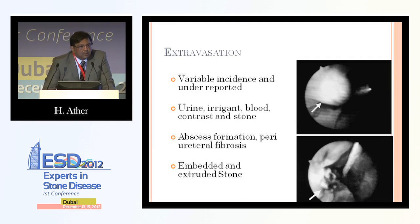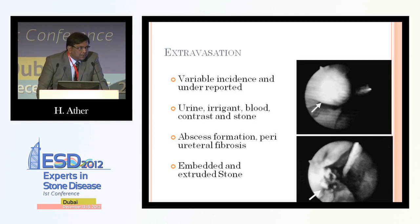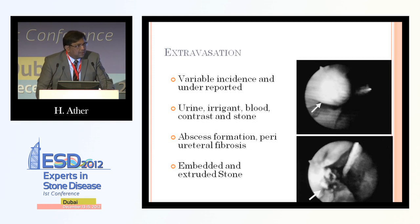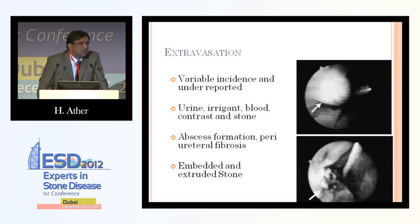Extravasation is important because it is relatively common. Urine, irrigating fluid, and blood can all extravasate and result in abscess formation, which can subsequently result in periureteral fibrosis and stricture, with significant long-term consequences. Contrast and stone can also extravasate. It is important to distinguish an embedded stone from an extruded stone — an embedded stone can be managed by incising the mucosa with your laser fiber, drawing the stone within the ureteral lumen, and fragmenting it.